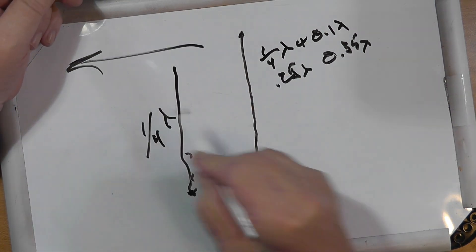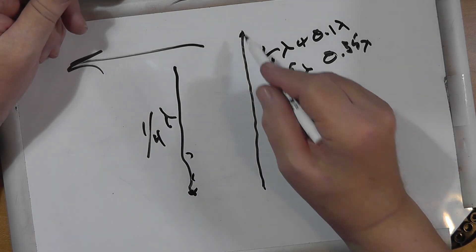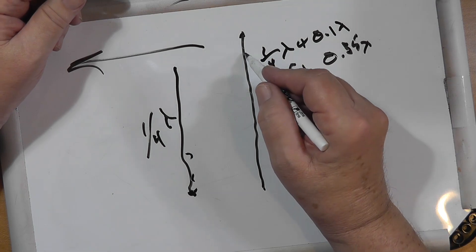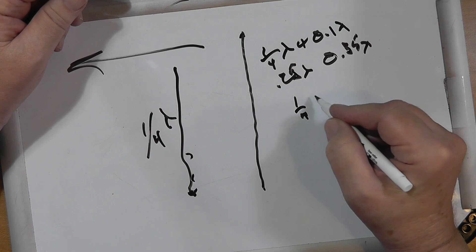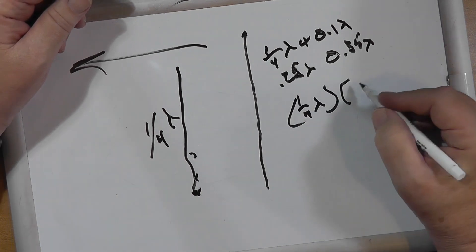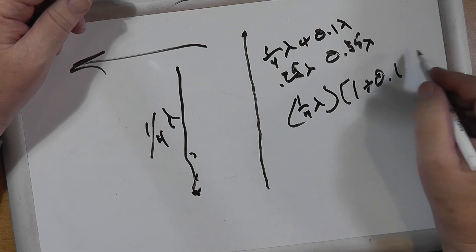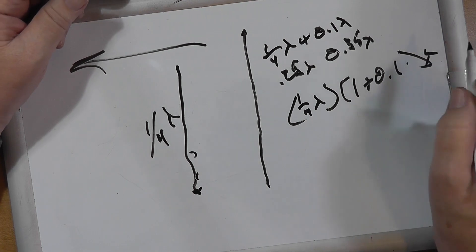The answer is this is much too long. It should be more like one quarter lambda times 1 plus 0.1 lambda - everything's in lambda. In other words, a little bit longer.